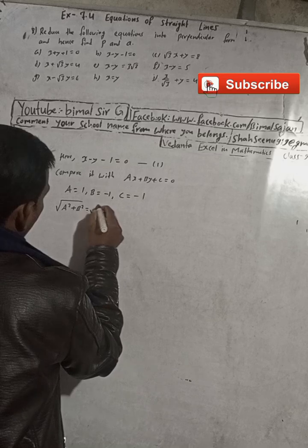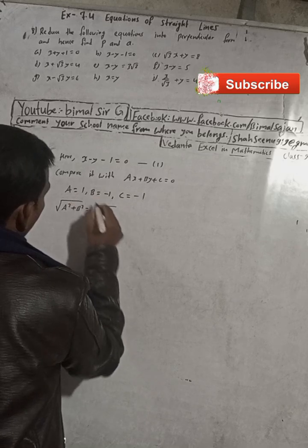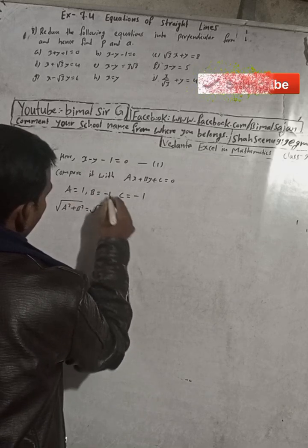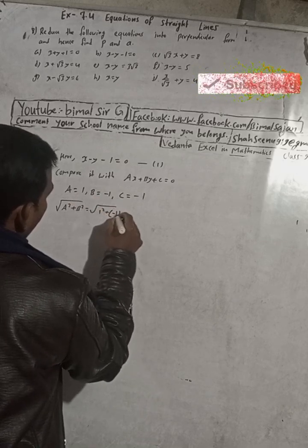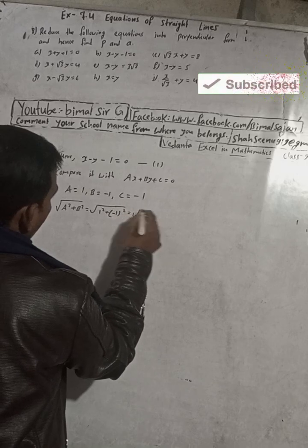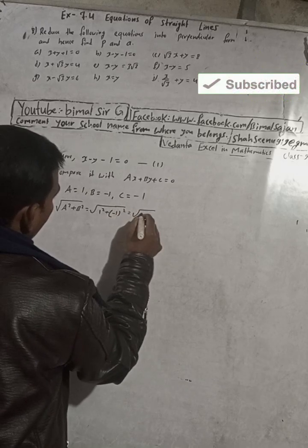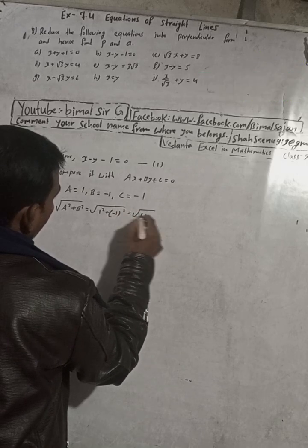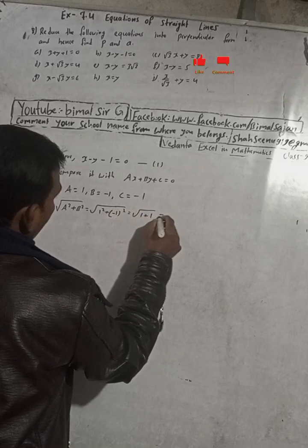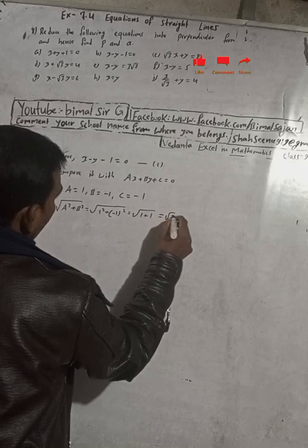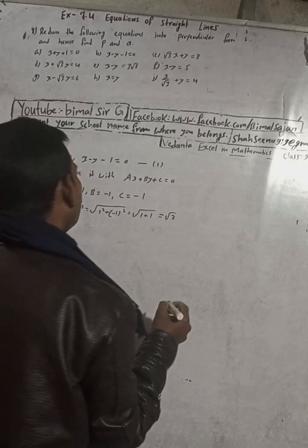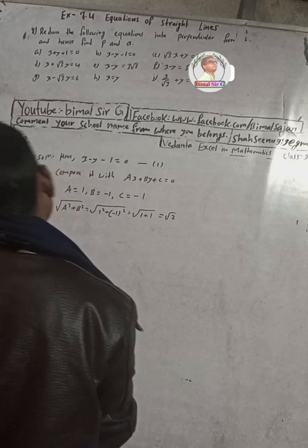Now we calculate the square root of a squared plus b squared, which is root of 1 squared plus (minus 1) squared. That is root of 1 plus 1, which equals root 2.